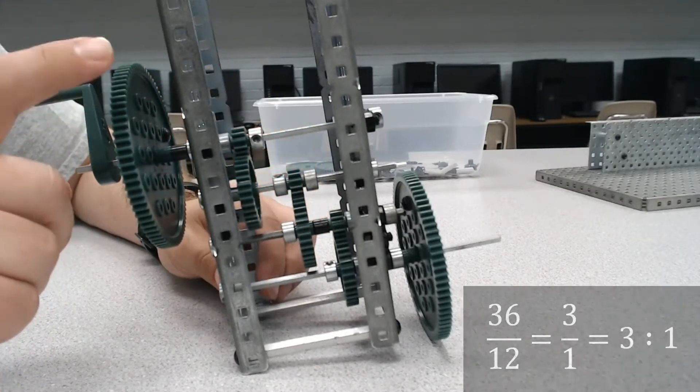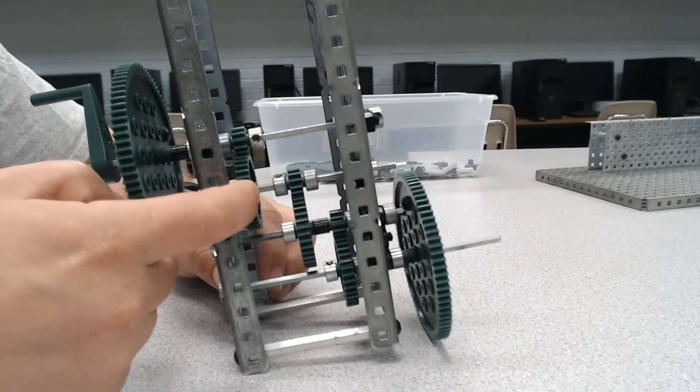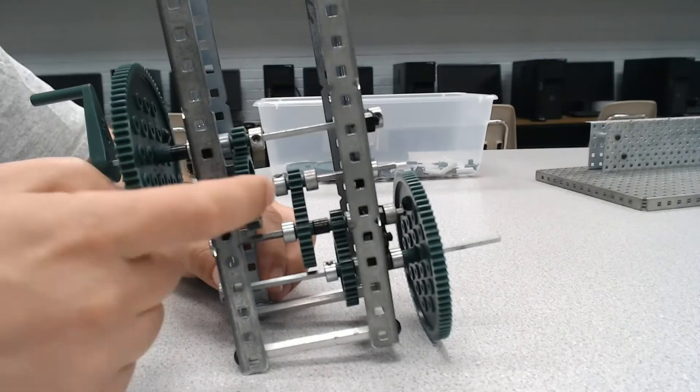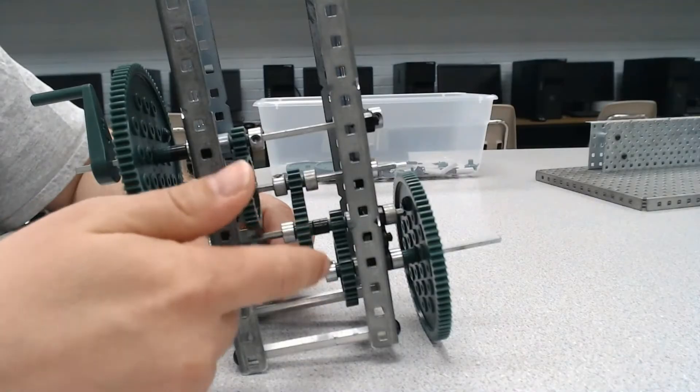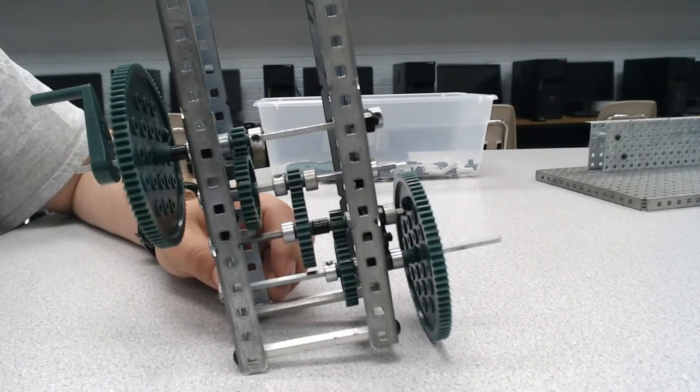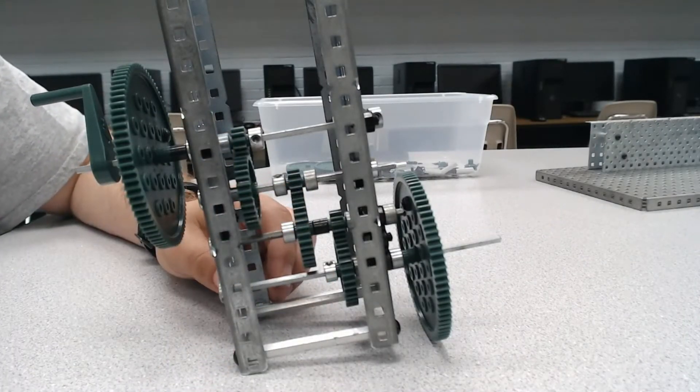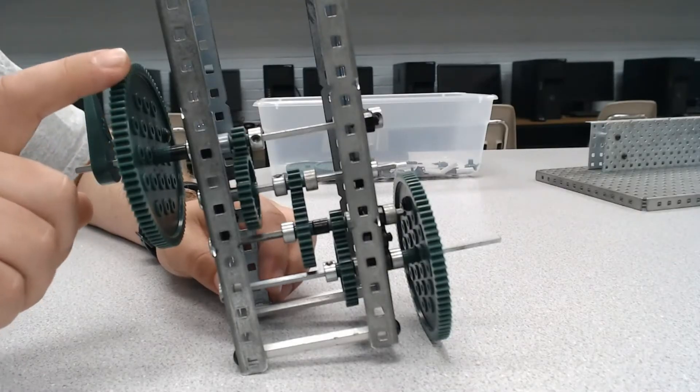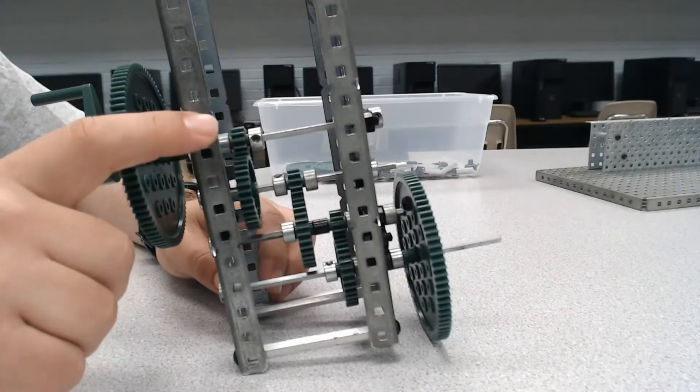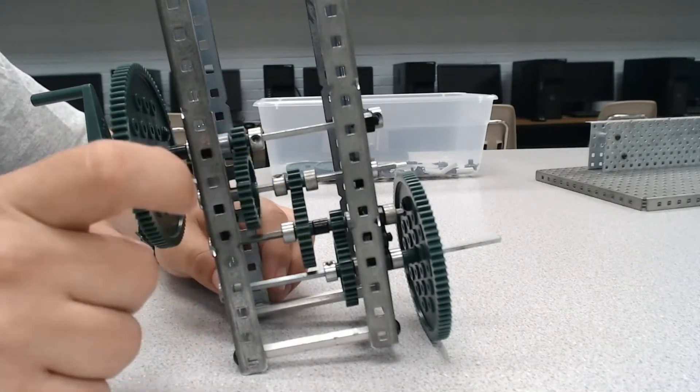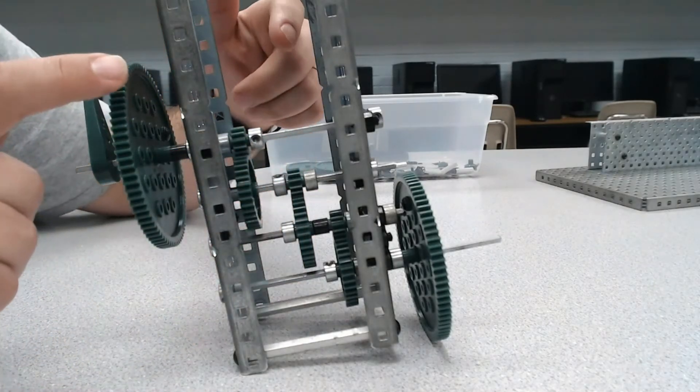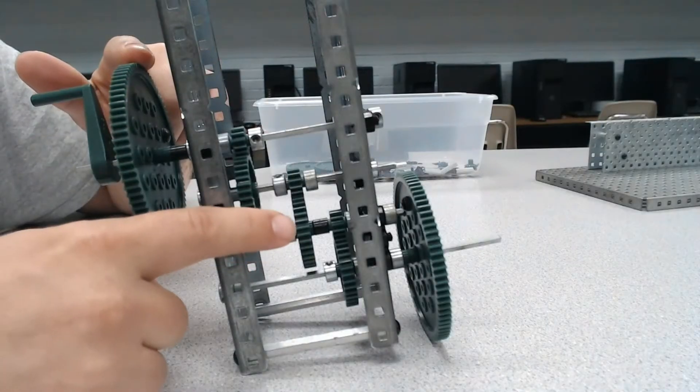That means three rotations of my input to get one rotation out of my output. And since this is three-to-one, these are the same. So each one of these is an individual three-to-one gear ratio. In a compound gear system, we take those ratios and multiply them.